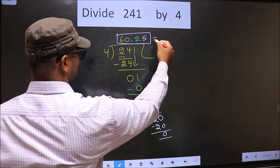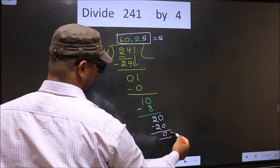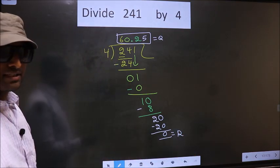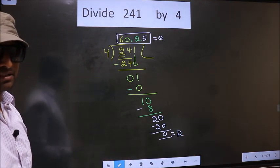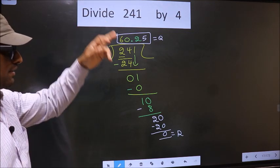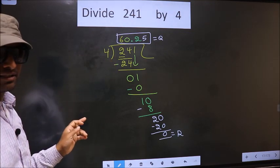So, this is our quotient. And this is our remainder. Did you understand where the mistake happens? You should not do that mistake. Am I clear? You are.